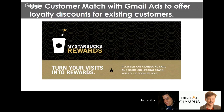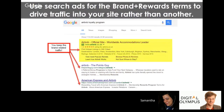Seventh: customer match with Gmail ads to promote your loyalty scheme. For a brand like Starbucks, upload a list of customers who haven't signed up for your loyalty program yet, and when they're checking email in Gmail's promotions tab, show them an ad promoting the loyalty scheme. Customers tied into loyalty schemes come back more often because they know they'll get something in return for repeat purchases.